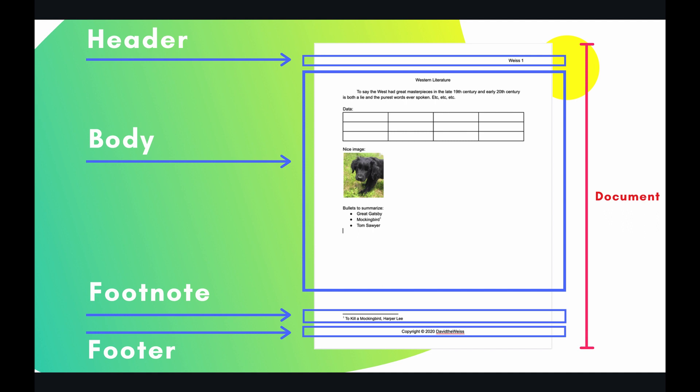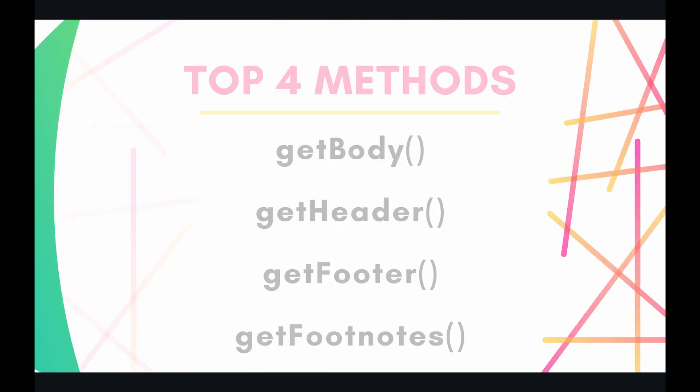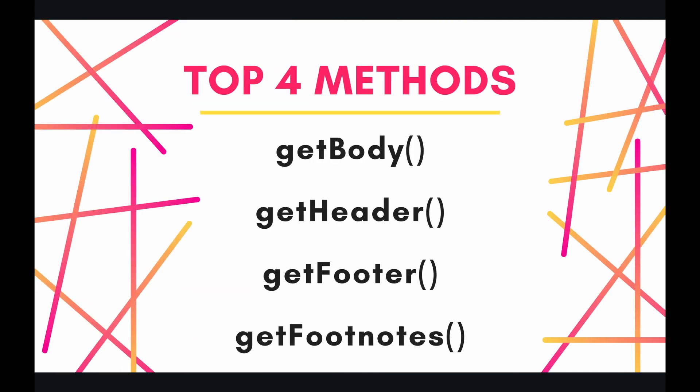So let's look at the methods we can use to get these sections. They are very self-explanatory. The four methods for this video are getBody, getHeader, getFooter, and getFootnotes. These are very simple, but just for completeness let's jump into the code and look at these methods in action.